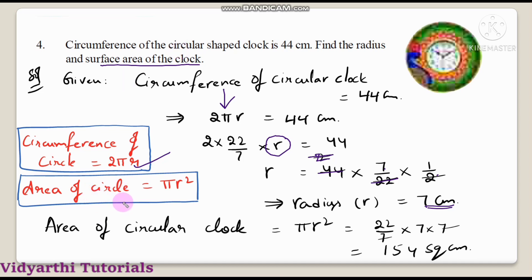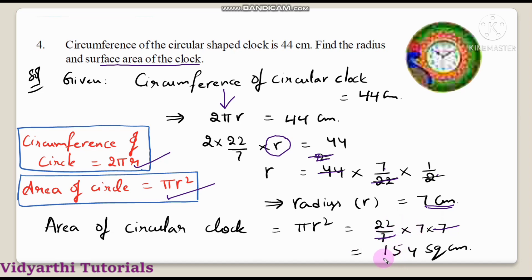Now find the area of the clock. Area of circle formula is pi r square. Substituting: 22 by 7 into 7 squared, that is 7 into 7. The 7 cancels, giving 22 into 7, which equals 154. So the area of the circular clock is 154 square centimeters. Understood, children?